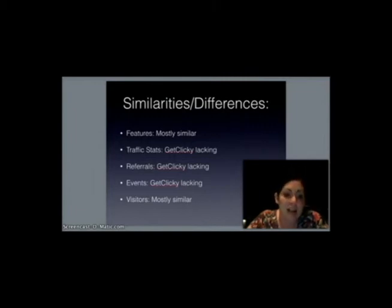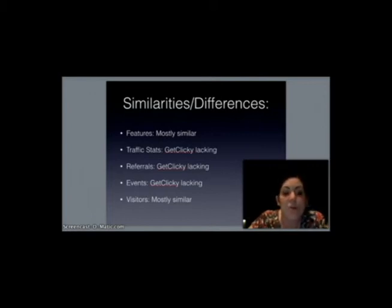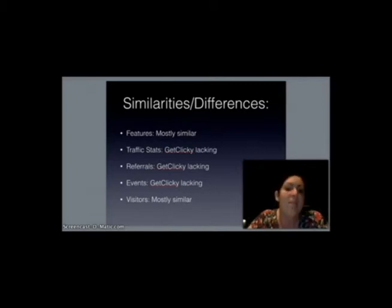For the traffic stats, all three have page views, unique visitors, visit history, entry and exit pages, exit links, events per page and visit, and time spent on site. GetClicky, however, does not provide time spent on page, average visits per day, popular pages, or visitor path. As far as referrals go, all three provide referring domains, referring search engines, and search keywords and phrases. GetClicky doesn't provide any internal referrers, which means we wouldn't be able to see which search terms were entered by users visiting our site.